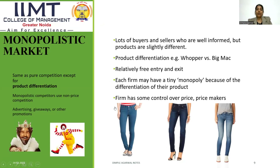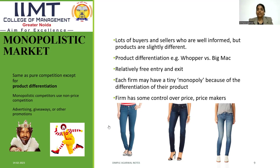In imperfect competition, we start with monopolistic market. Monopolistic market is similar to perfect market, but there are only two differences. The first is that the products are differentiated, and the second is that in monopolistic market, firms are price makers and not price takers. There are a large number of buyers and sellers and they are well-informed, but the products are slightly different — for example, the Whopper of Burger King and the Big Mac of McDonald's are two differentiated burger products.